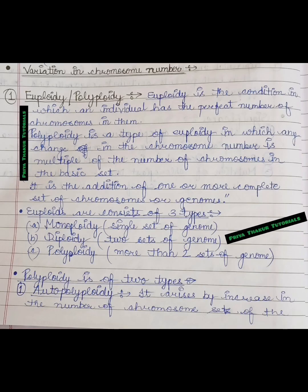The first type is euploidy. Euploidy is the condition in which an individual has a perfect number of chromosomes in them. So euploidy is a condition where any individual has the perfect number of chromosomes present.